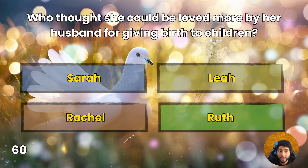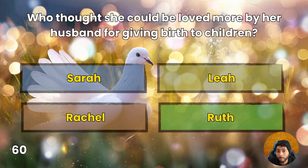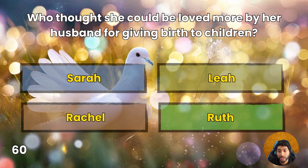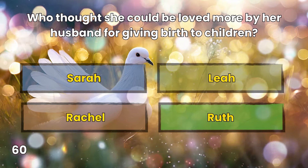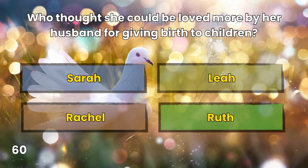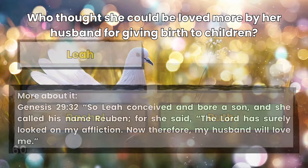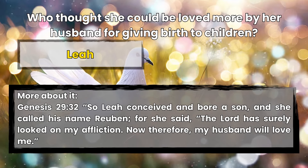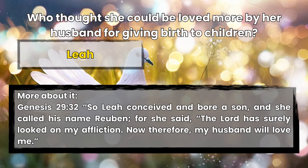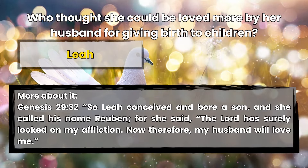Question 60: Who thought she could be loved more by her husband for giving birth to children? Sarah, Leah, Rachel, or Ruth? Leah. Genesis 29:32 — So Leah conceived and bore a son, and she called his name Reuben, for she said, 'The Lord has surely looked on my affliction; now therefore my husband will love me.'